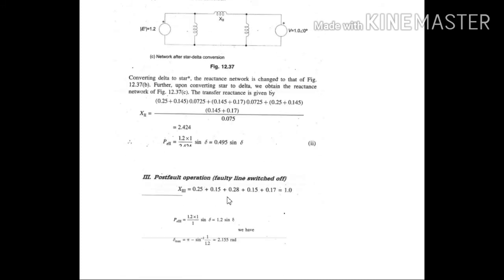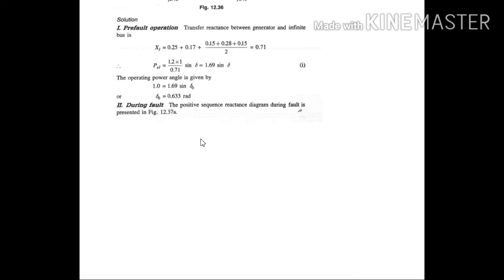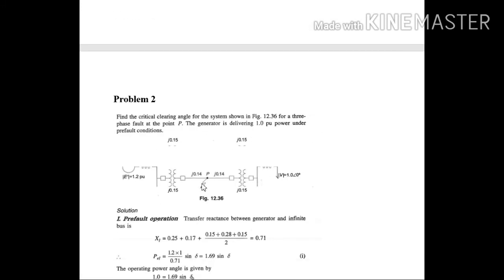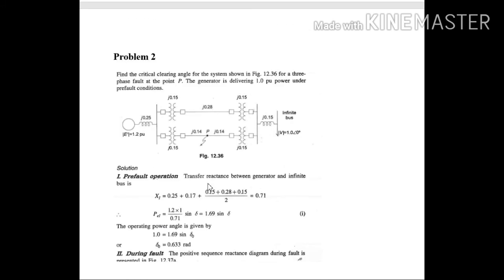Then for post fault condition, what will be the post fault condition? The fault has been cleared. So obviously from this diagram, now this fault has been cleared. Therefore the total reactances will be the series combination of all these reactances.